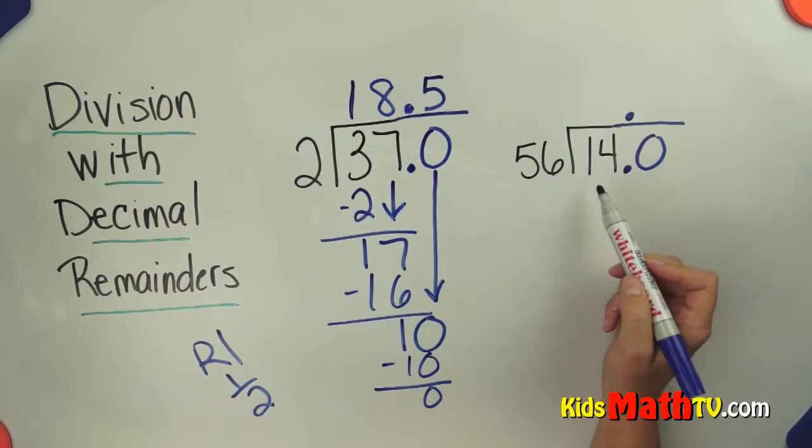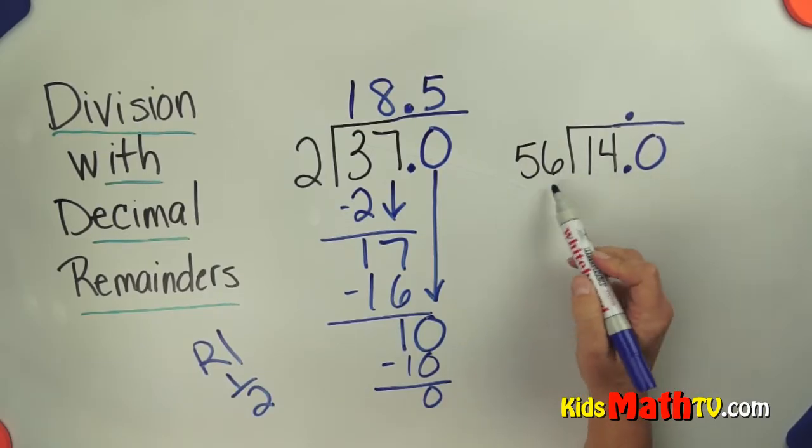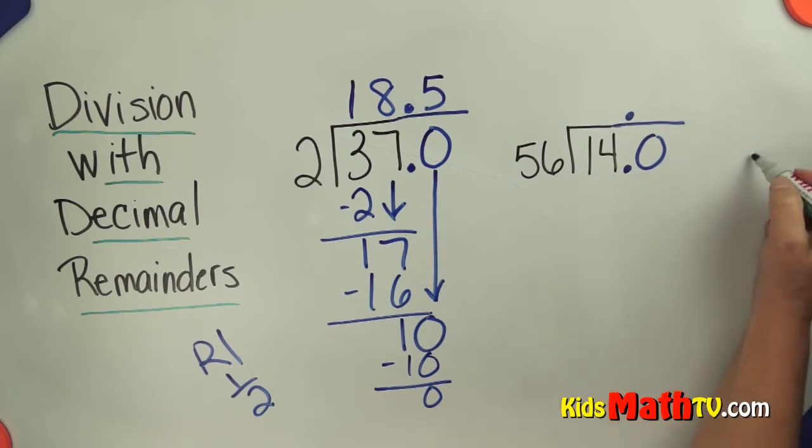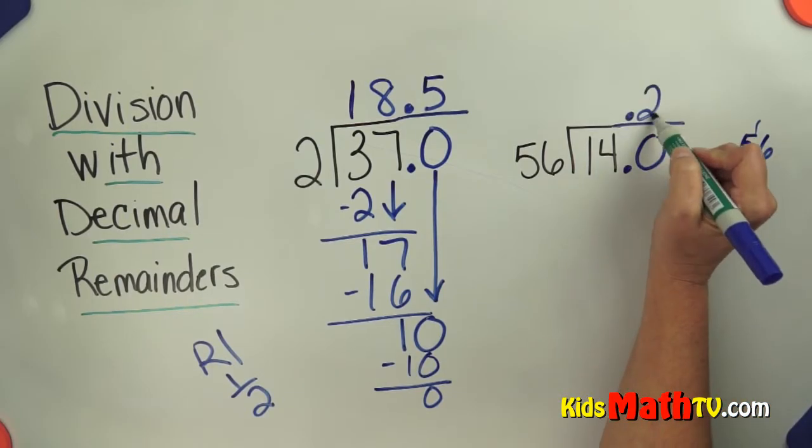Well, how many 56's are in 1? None. In 14? None. In 140? I'm thinking maybe I'll try 3, but I think it's only 2. Let's see. Yep, too much. So there are 2.